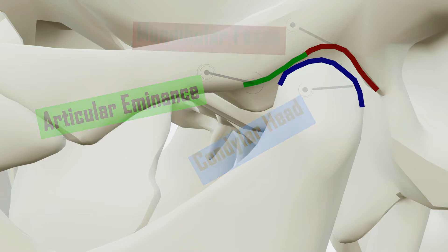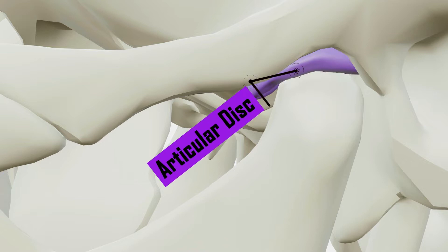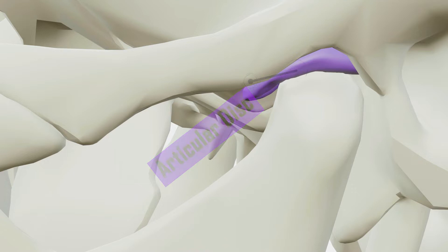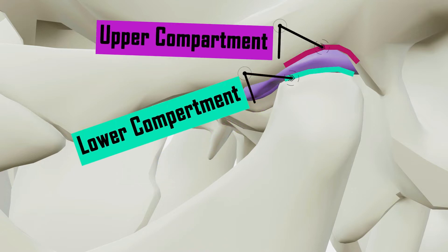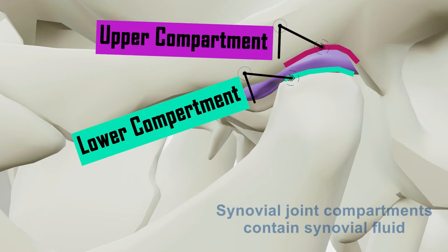This joint has a unique mechanism. The articular surfaces of the bones never come into contact with each other. They are separated by an articular disc. The presence of such a disc splits the joint into two synovial joint cavities — upper and lower compartments — each lined by a synovial membrane and containing synovial fluid.